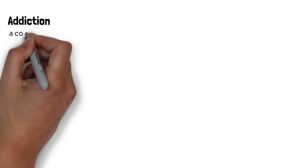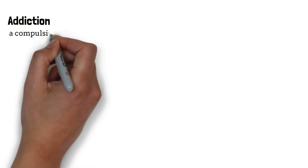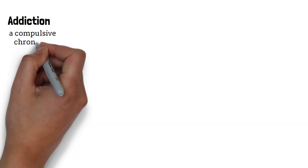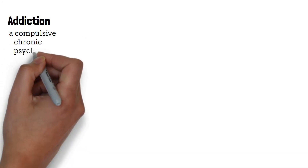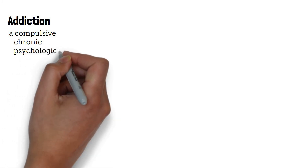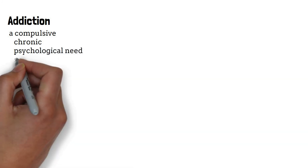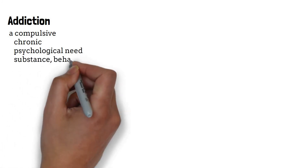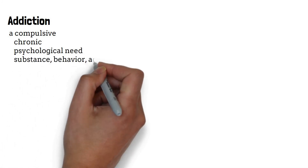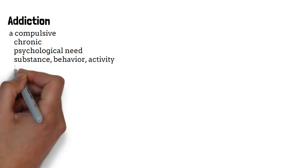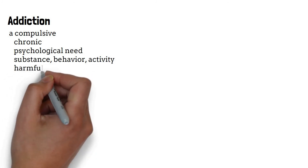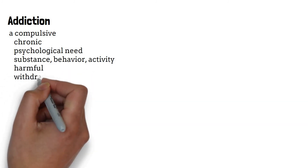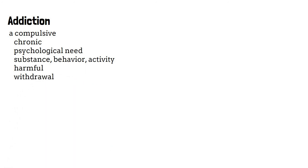This is the video on addiction. According to the dictionary, addiction is a compulsive, chronic, physiological or psychological need for a habit-forming substance, behavior, or activity having harmful physical, psychological, or social effects. It typically causes well-defined symptoms such as anxiety, irritability, tremors, or nausea upon withdrawal or abstinence. That was a mouthful — let's break it down.